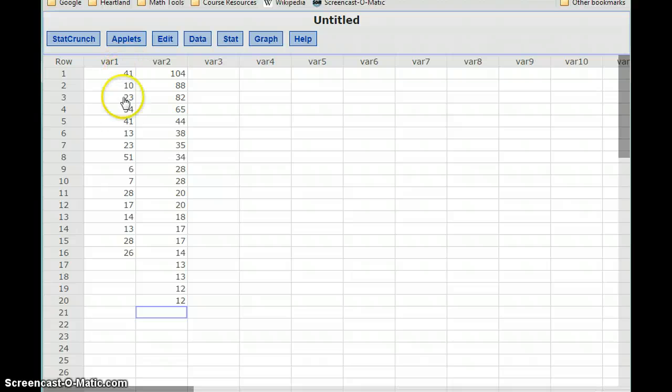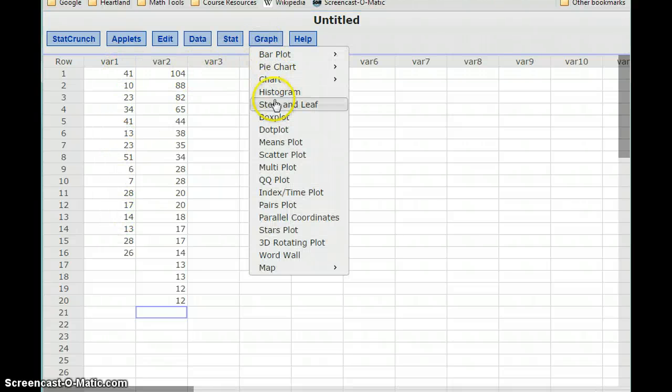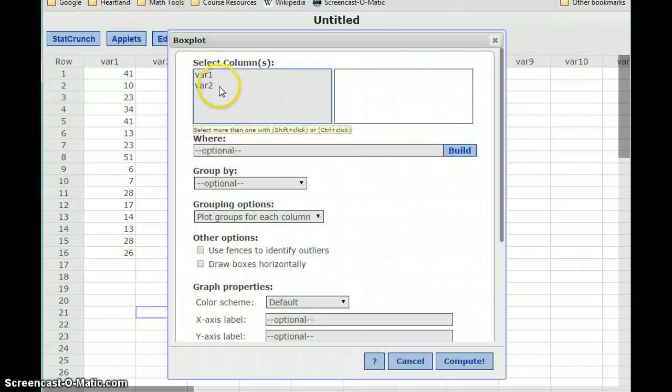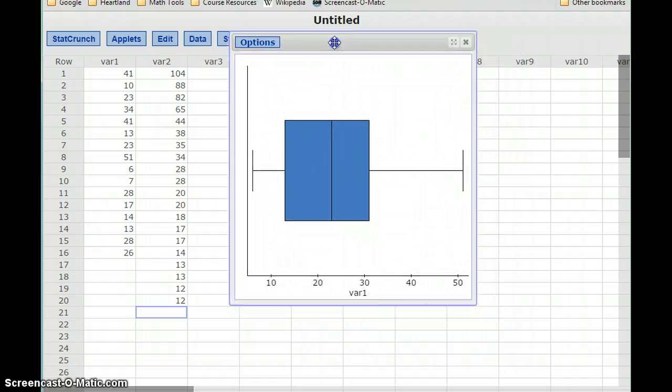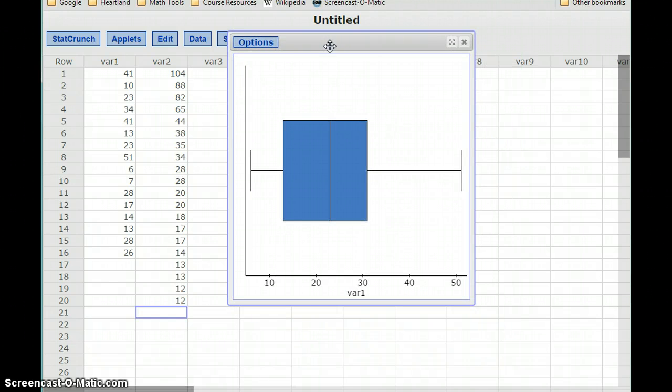With this data already typed into StatCrunch as variable 1, I can select graph, box plot, the variable that I want to consider, use fences to identify outliers, and draw boxes horizontally. Again that's an option. And then clicking compute will give us this box plot that we ended up with.